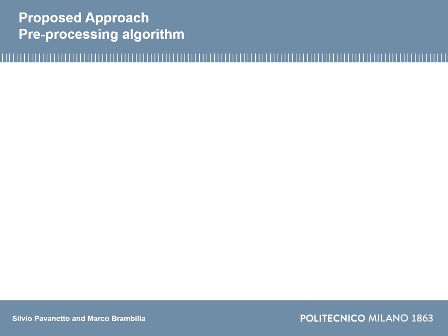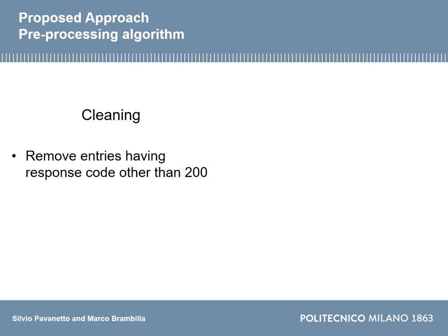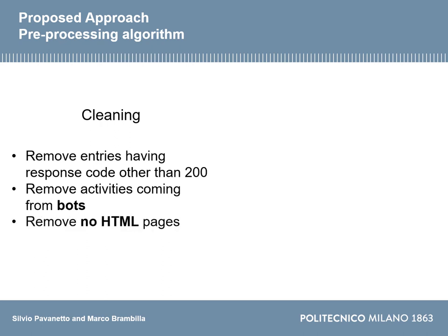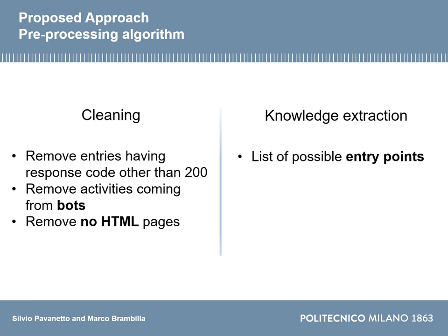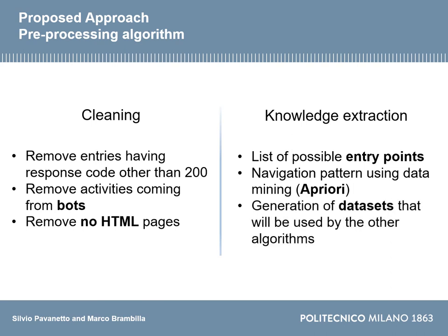We start with the pre-processing algorithm on our publicly available weblog. This is an important task because it produces a clean dataset for the next phases. We begin by cleaning the log — removing entries with response codes other than 200, removing bot activity, and removing non-HTML pages. Then in the knowledge extraction phase we list possible entry points representing home pages where users can start navigation, apply data mining techniques like A-priori for navigation pattern extraction, and generate the datasets needed for the baseline and deep learning algorithms. The key difference is that the baseline dataset contains all statistical information and navigation patterns, while the deep learning dataset contains only navigation sequences.